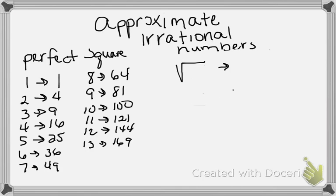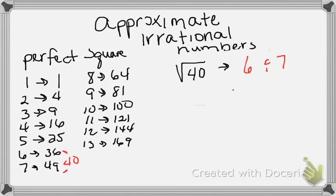Now let's look at an irrational number. Let's take √40. I need to find what perfect squares 40 falls between. Looking at the chart, 40 falls between 36 and 49, so our answer is between 6 and 7. The closer 40 is to one side or the other tells us whether it's below or above 6.5. In this case, 40 is closer to 36, so our number is probably just a little lower than 6.5 — maybe 6.3 or 6.4. Our approximation is that √40 is between 6 and 7.